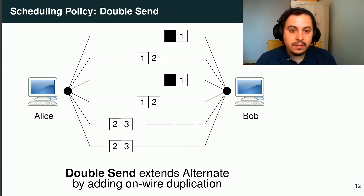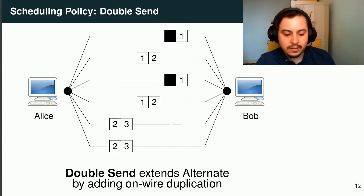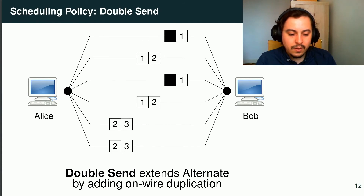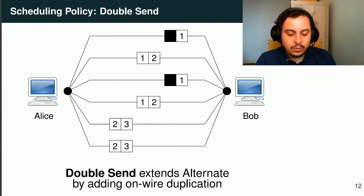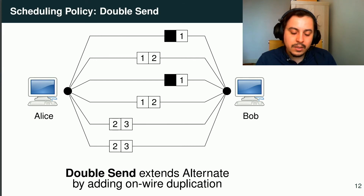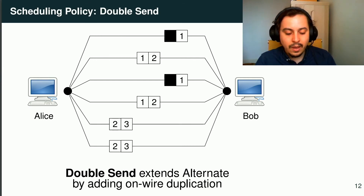For some extreme cases, the Alternate policy does not send enough redundancy, which is why we propose DoubleSend as an Alternate extension. This time, we allow ourselves to send more data on the network — for each UDP packet received, Dona will send two TCP packets. In the end, the destination receives each VoIP packet four times on four different links, and as long as at least one of these four links is not experiencing latency issues, data will be delivered on time.